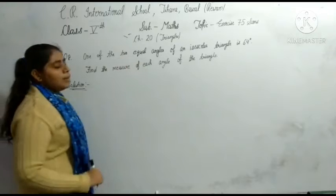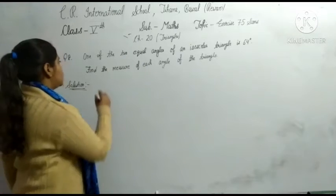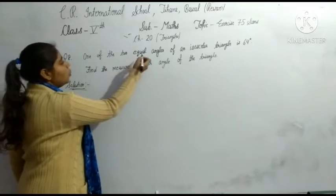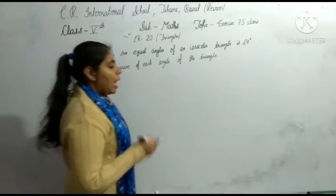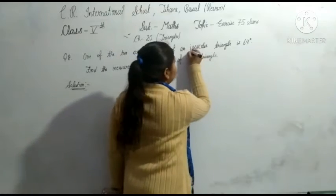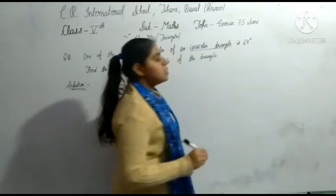What is the first statement? One of the two equal angles of an isosceles triangle is 64 degrees. You know that the word is an isosceles triangle.